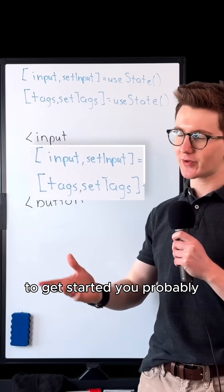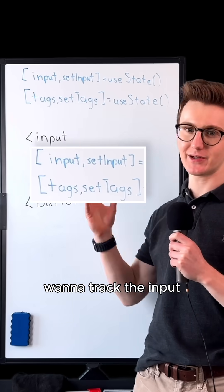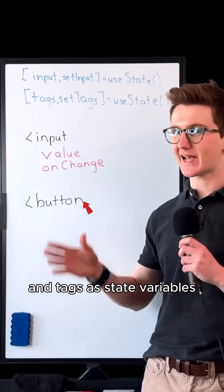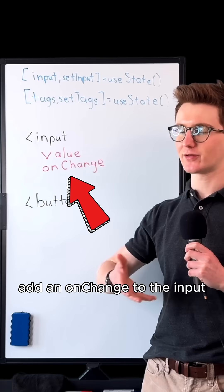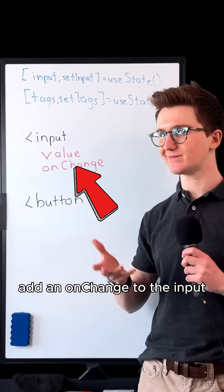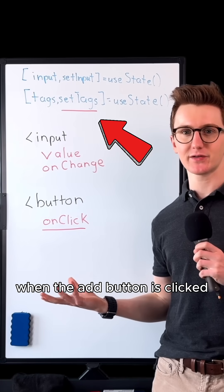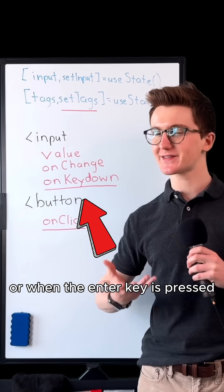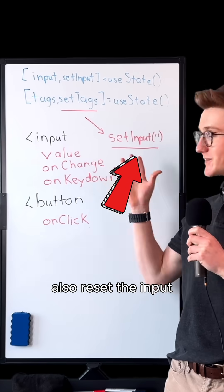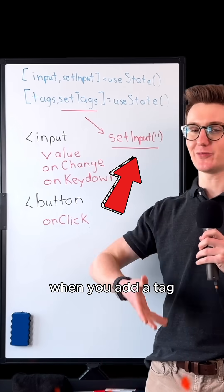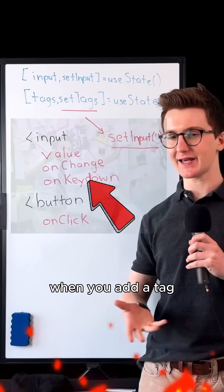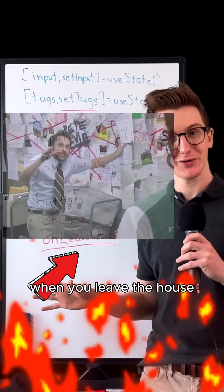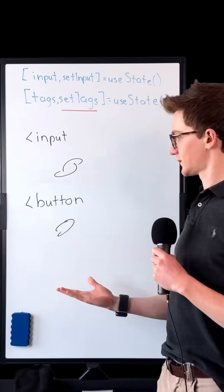To get started, you probably want to track the input and tags as state variables, add an onChange handler to the input, set the tags when the add button is clicked or when the enter key is pressed, also reset the input when you add a tag, don't forget to lock the door when you leave the house — and okay, let's start over.